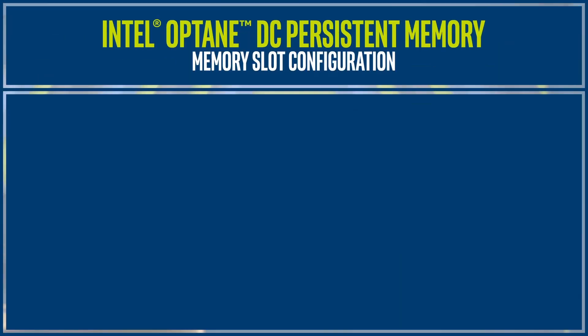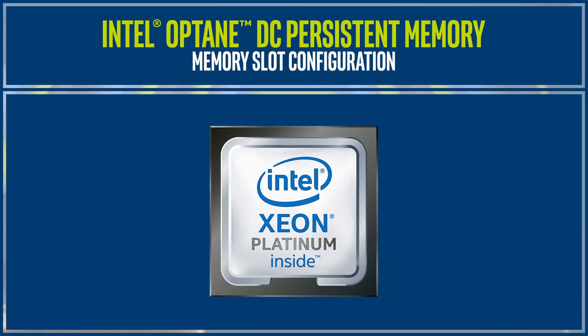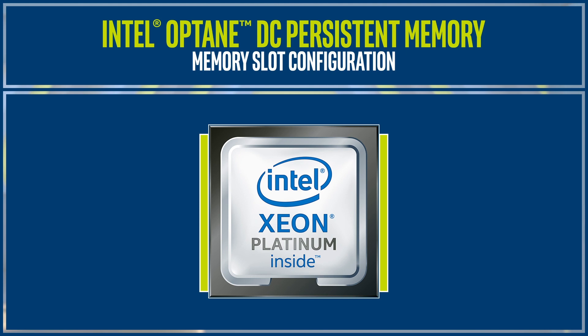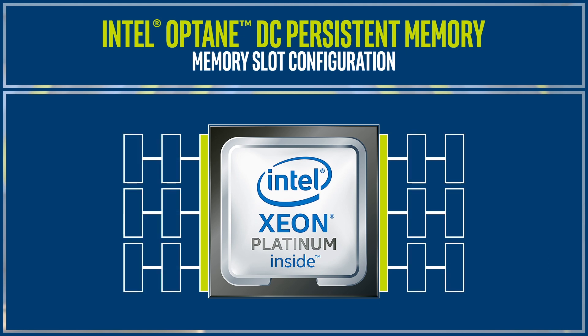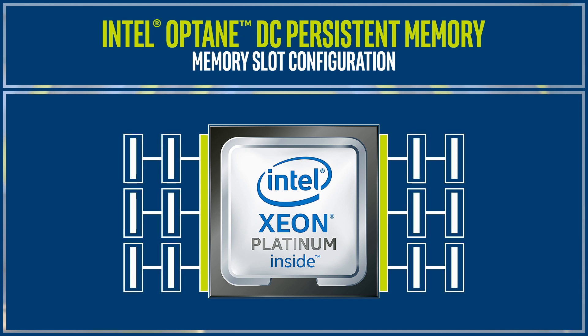The second factor is the memory slot configuration. Each second generation Intel Xeon Scalable Processor has two integrated memory controllers. Each controller has three memory channels, and each channel can support up to two memory slots. The configuration type is designated by the number of slots on each one of the memory controllers.